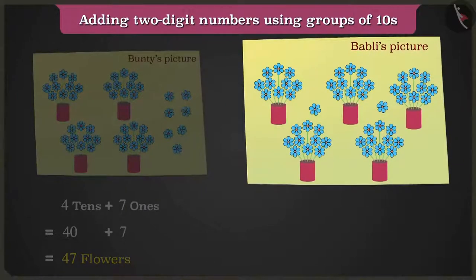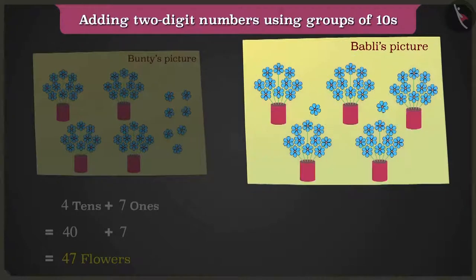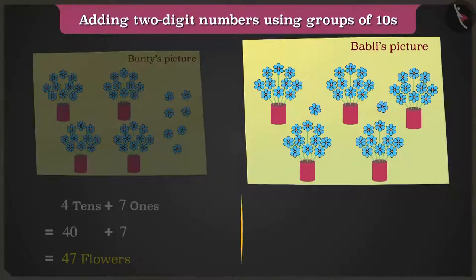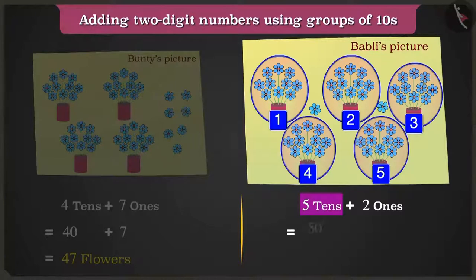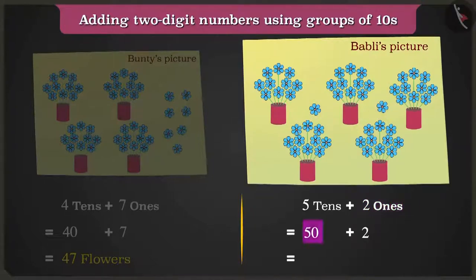Bubbly's drawing paper has one, two, three, four and five flowerpots of ten flowers each and two loose ones. So here, there are five tens that are fifty and two ones that are two. Fifty and two — in total, fifty-two flowers.